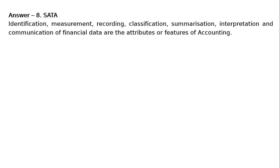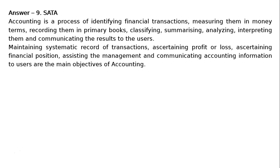Question 9: What do you mean by accounting? What are its main objectives? Accounting is a process of identifying financial transactions, measuring them in money terms, recording them in primary books, classifying, summarizing, analyzing, interpreting them and communicating the results to the users. The main objectives are: maintaining systematic record of transactions, ascertaining profit or loss, ascertaining financial position, assisting the management and communicating accounting information to users.